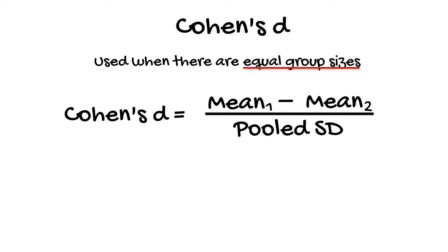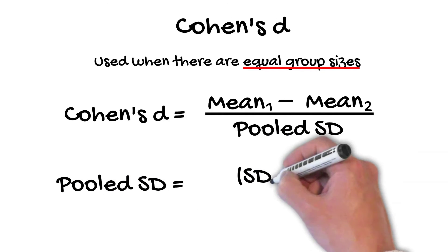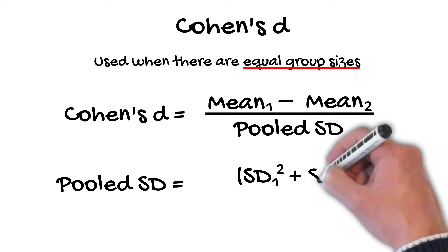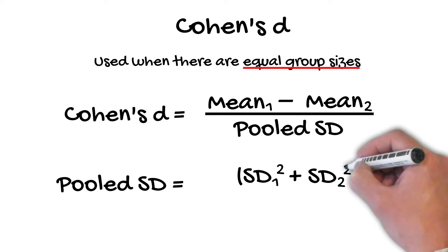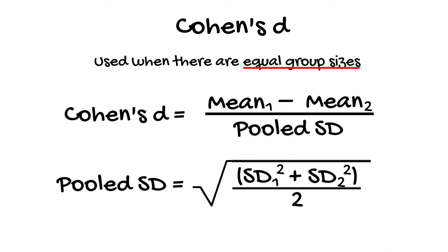And in this case, the pooled standard deviation can be calculated as follows. Standard deviation of the first group squared, plus the standard deviation of the second group squared, divided by 2, and you take the square root of that.